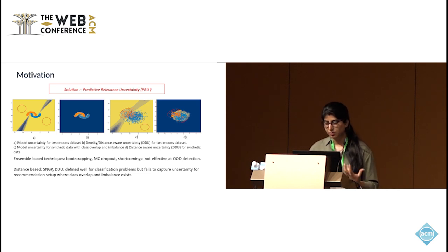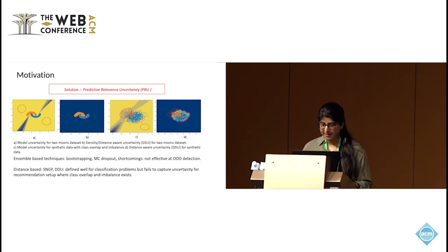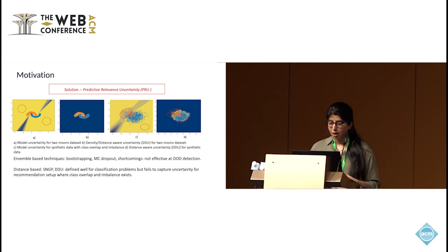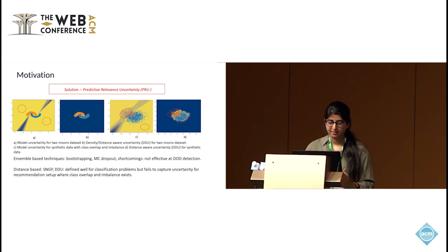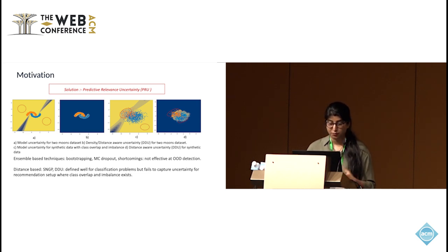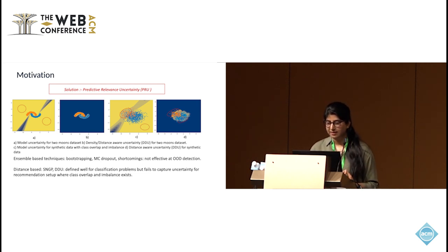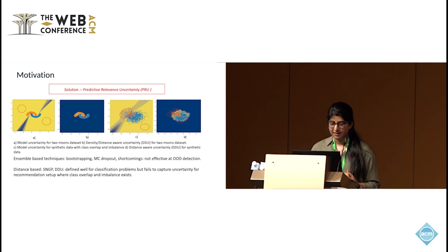But when we simulate the behavior of class overlap and imbalance in the recommendation system — shown in figures C and D — both the model-based and distance-aware uncertainty fail to capture the notion of uncertainty. For example, in C, the minority class gets high uncertainty and OOD samples also have high uncertainty with ensemble and MC dropout-based methods. Distance-aware uncertainty, which works for traditional classification datasets, also fails because uncertainty will be lowest in the class overlapping region, as the training data distribution is concentrated mostly for both classes in that region.